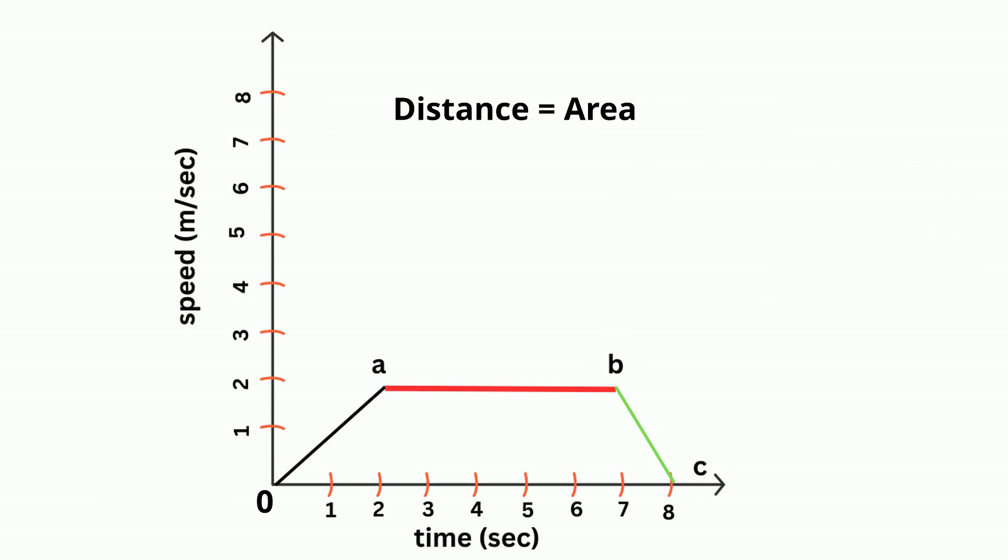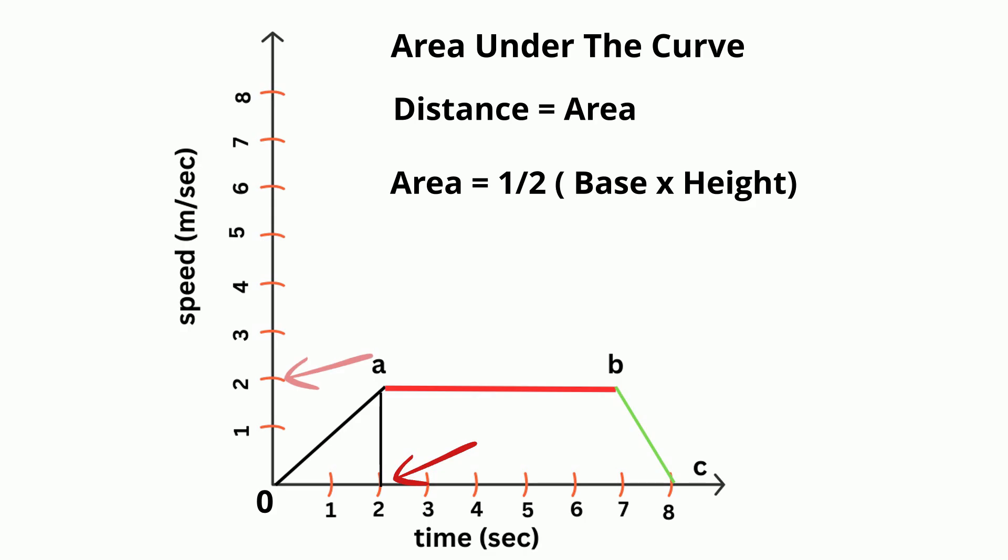You can also calculate the distance by finding the area. So what's the distance it traveled from zero to two seconds? Well, we can create a triangle. The area of a triangle is one half base times height. So it would be one half times the base of two, the height of two. That would be four times one half, which is equal to two meters.